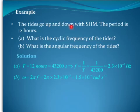The tides go up and down with simple harmonic motion, and the period is 12 hours. As you know, you get high tides every 12 hours. Question (a): What is the cyclic frequency of the tides? Question (b): What is the angular frequency of the tides?